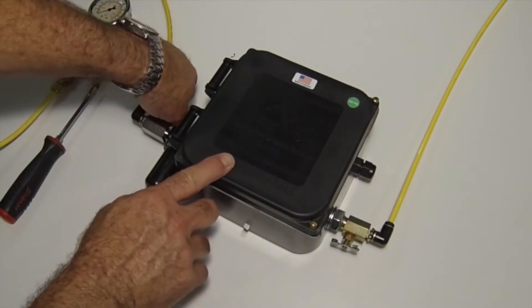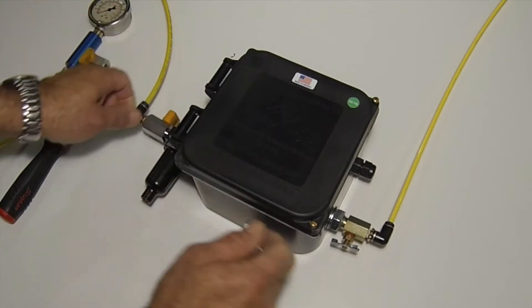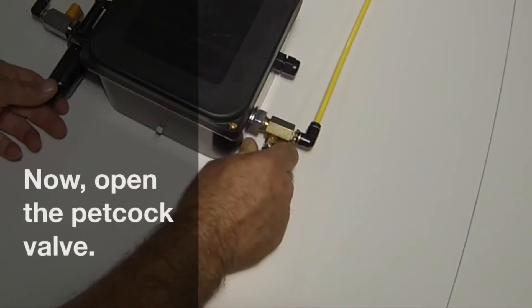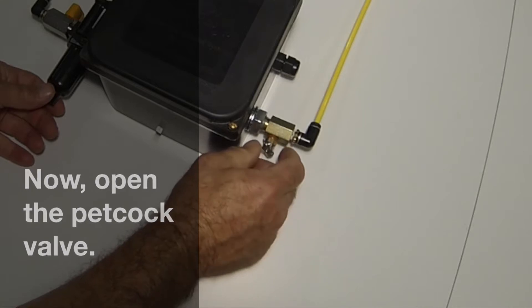Begin by shutting off the system. To do this, move the on-off ball valve to the closed position. Next, open the system drain petcock to release any pressure that may be still in the system.